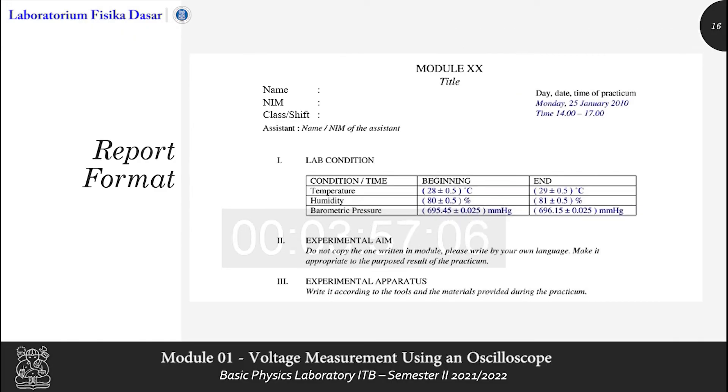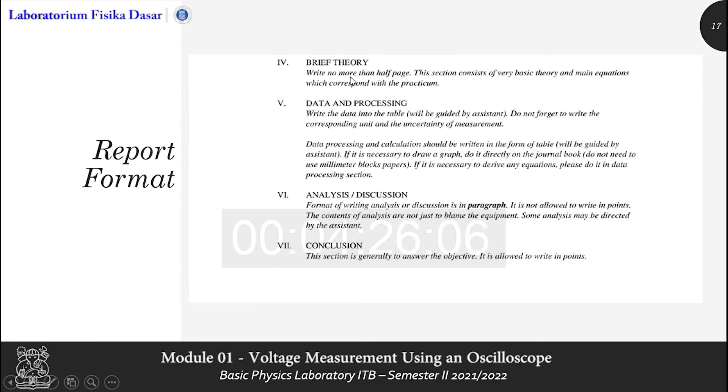And the last is to explain the general rules format for the basic physics report. First, there is the header of the module report, including the module number, title, part time of practicum, and also your identity and the assistant identity followed by lab condition into the data given. And next, explain experimental aim, experimental apparatus. Brief theory, that should be no more than half-page, but must consist the very basic theory and main equation. And then, the data and processing.